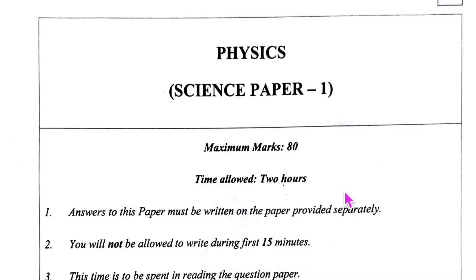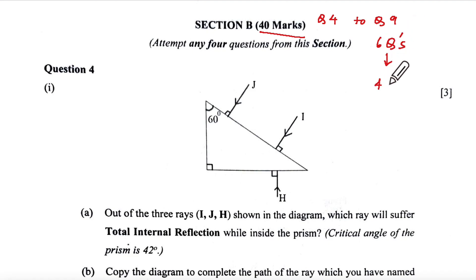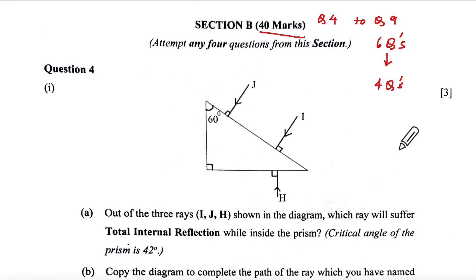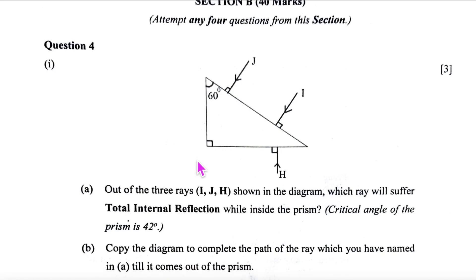The 2025 board paper of physics is in hand. We come to Section B, which is also 40 marks, covering questions 4 to 9 — six questions total, from which you choose 4 for maximum marks. When you get the paper, look at Section B first and select questions that give you maximum marks. Solutions for questions 1, 2, and 3 have already been uploaded. Watch those before coming to question 4.